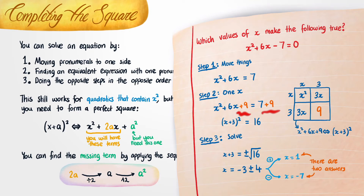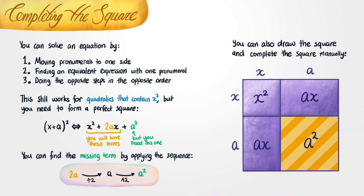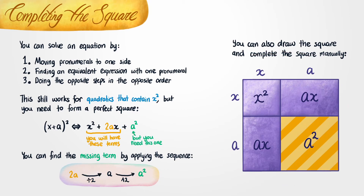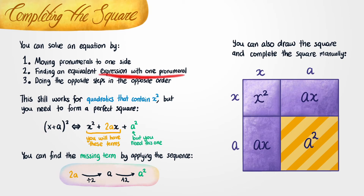In this lesson, we talked about how you can complete the square to solve quadratic equations. A quadratic equation is just an equation that, once simplified, contains an x squared. In order to complete the square, you could draw the square to find the missing part, or you can take the coefficient of x, divide it by 2, then square it to get a squared. The point of doing this is to change an expression that contains two x's into one that contains only one x, which allows you to do step 3 — the opposite steps in the opposite order.